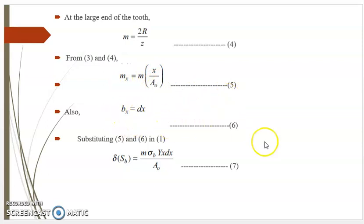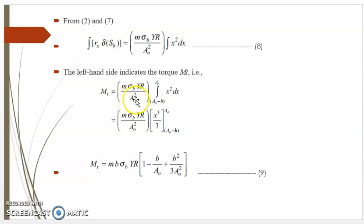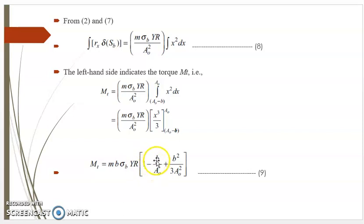Substituting equations 5 and 6 into equation 1, delta·Sb equals m·sigma_b·y·x·dx/A0 — equation 7. From equation 2 and 7, integrating rx·delta·Sb gives m·sigma_b·y·R/A0² times the integral of x²·dx — equation 8. The left-hand side indicates the torque mt. Therefore mt equals m·sigma_b·y·R/A0² integrated from (A0 minus B) to A0 of x²·dx. Evaluating this integral, mt equals m·sigma_b·y·R times [1 minus b/A0 plus b²/(3·A0²)] — equation 9.